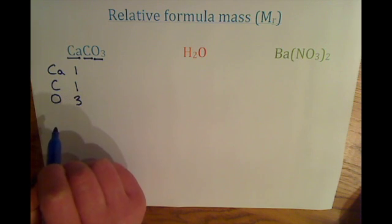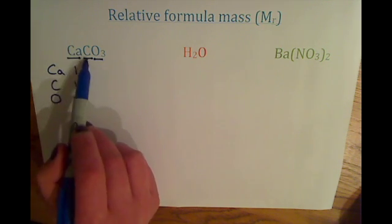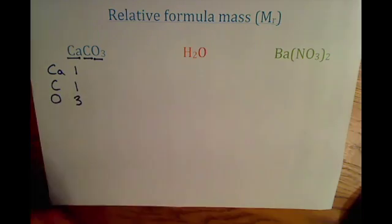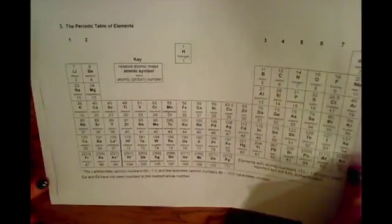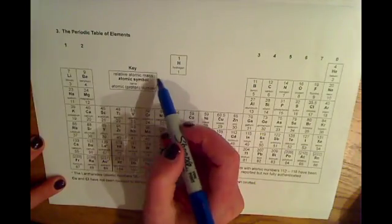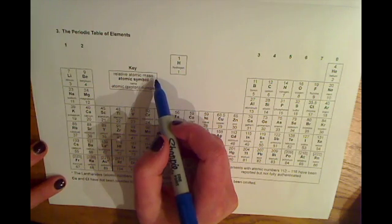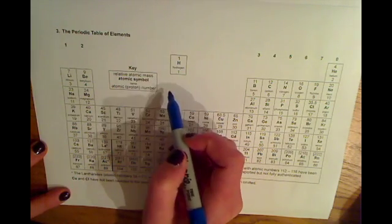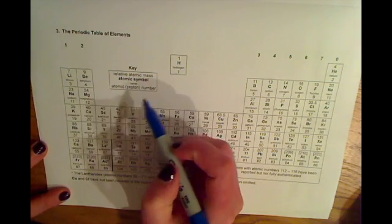And then the next thing we need to do is find out the mass of each of these. So if we go to our periodic table, which you will get in your exam, you really need to get in the habit of looking at the key, because that will give you an indication of which number, the top or the bottom, is the mass number.